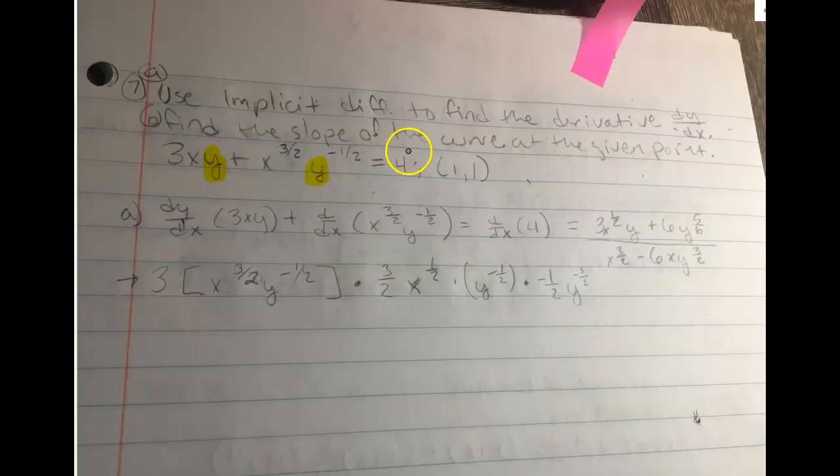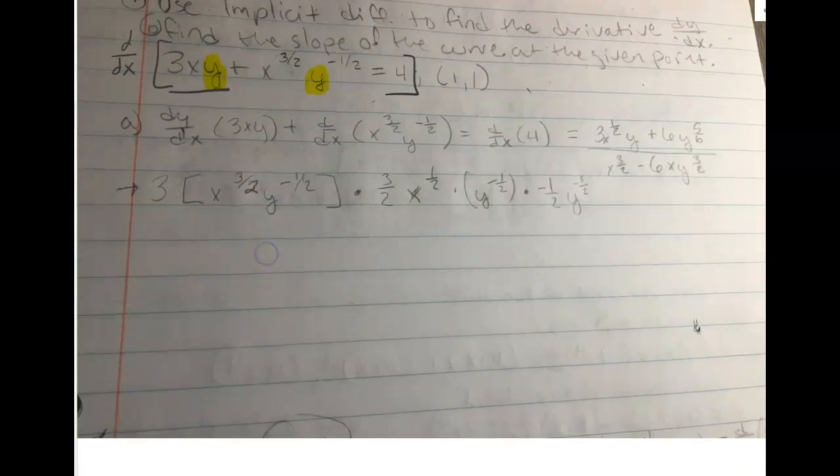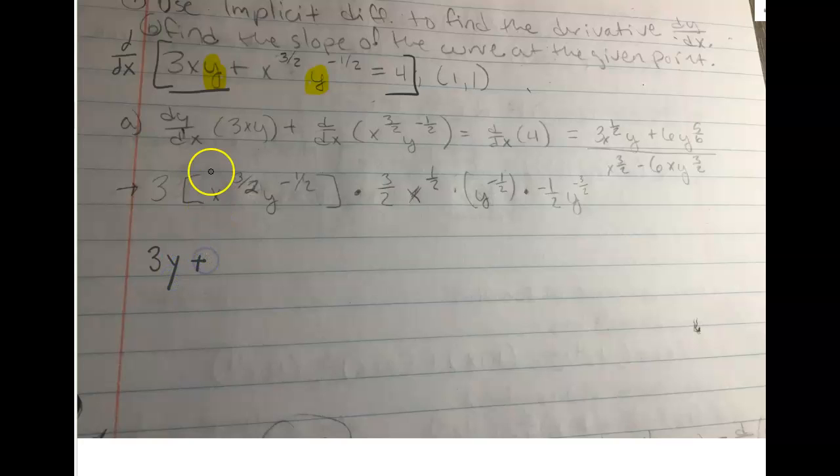Looking at here, if I'm going to take the derivative with respect to x, in the first function I have a product function. This would be the derivative of the first function, hold the second one. The derivative of 3x is 3, hold y, plus the derivative of the second function, hold the first. So I hold 3x, the derivative of y is dy over dx. That's what I'm trying to solve for.